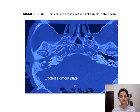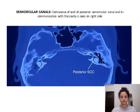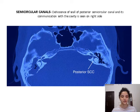Sigmoid plate: In a case of cholesteatoma, there is thinning and erosion of the right sigmoid plate, whereas the sigmoid plate on the left side is absolutely normal. Semicircular canals can sometimes be eroded — mostly the posterior or lateral semicircular canals. In this case, the wall of the posterior semicircular canal is eroded and communicates with the soft tissue filling the mastoid air cells, whereas on the left side the posterior semicircular canal is intact.